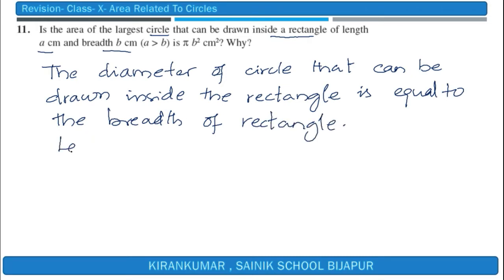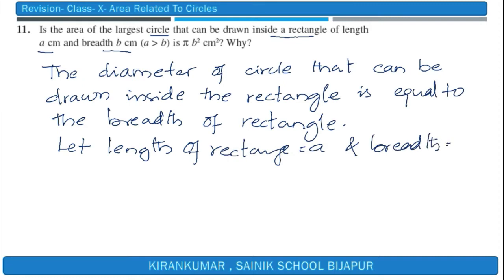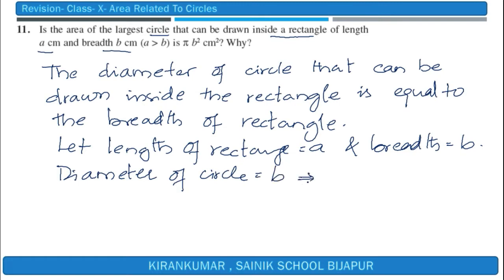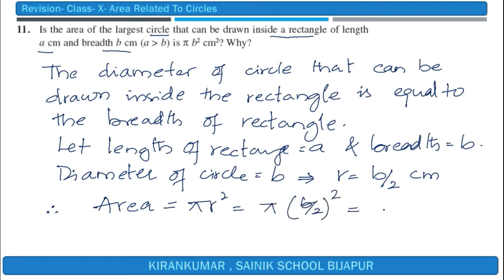Let the length be a units and breadth be b units. The diameter will be b units, so the radius will be b/2 centimeters. Therefore, the area = πr² = π(b/2)² = (1/4)πb² cm². Since the factor 1/4 is missing from the given statement, the statement is false.